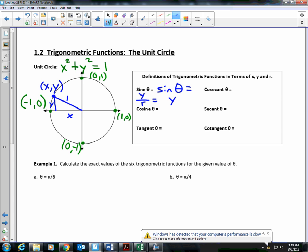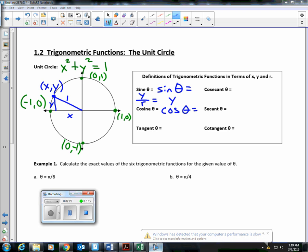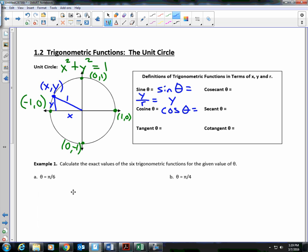Cosine, shorthand for cosine, is cos. Please do not say cos. Don't say cos. Say cosine. Okay? And that would be your x value divided by r, which, because the radius is 1, is just your x value in the unit circle.